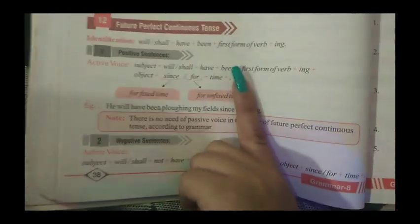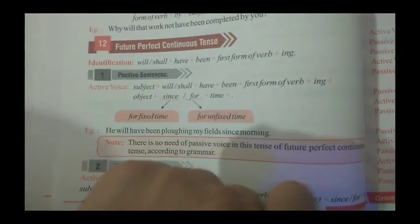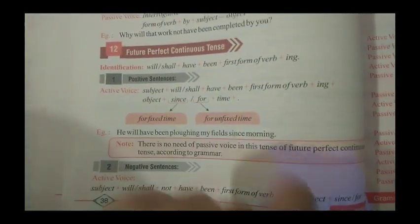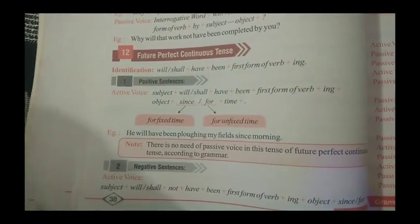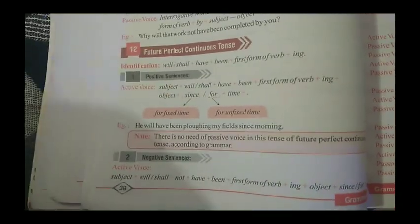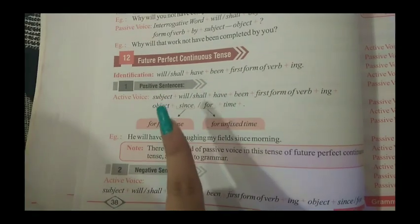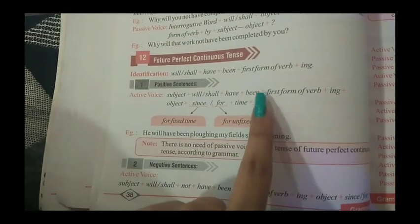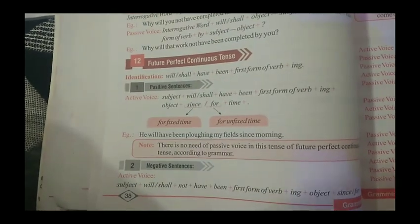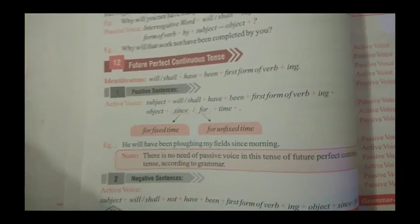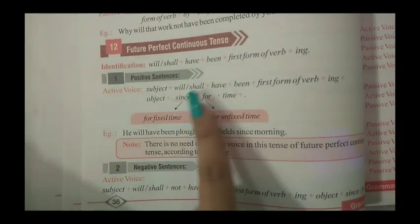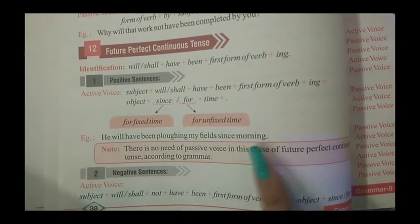The 12th tense is future perfect continuous tense. The identification of future perfect continuous tense is: will/shall + have + been + first form of verb with -ing, followed by the object. We use 'since' for a fixed point of time and 'for' for an unfixed period of time. For example: 'He will have been ploughing my field since morning.'